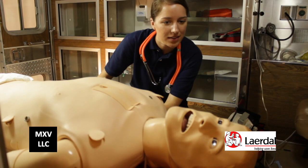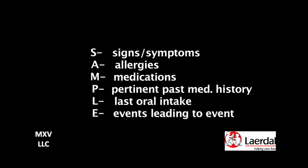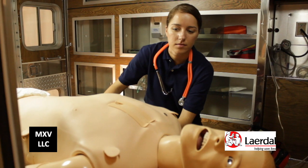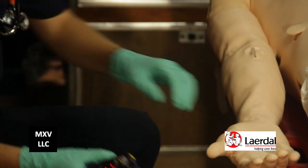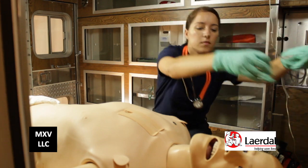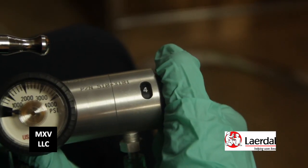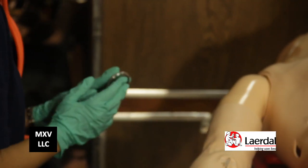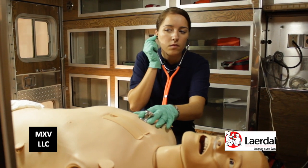She begins questioning the patient about the history of present illness and starts obtaining the patient's SAMPLE history. Recognizing the patient appears to be having an anaphylactic reaction, she places a pulse oximeter. The patient is placed on oxygen at 4 liters per minute. She then listens to the patient's lung sounds, which reveal widespread wheezing.